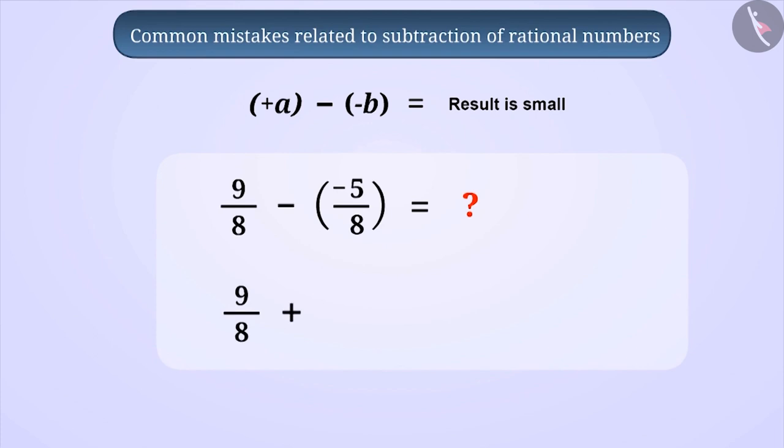For this, we can write it in the form 9 by 8 plus 5 by 8. Now, if we solve it, we will get the answer 14 by 8, which is a larger number than both rational numbers. So keep in mind that subtracting a negative number from a positive number results in a large number.